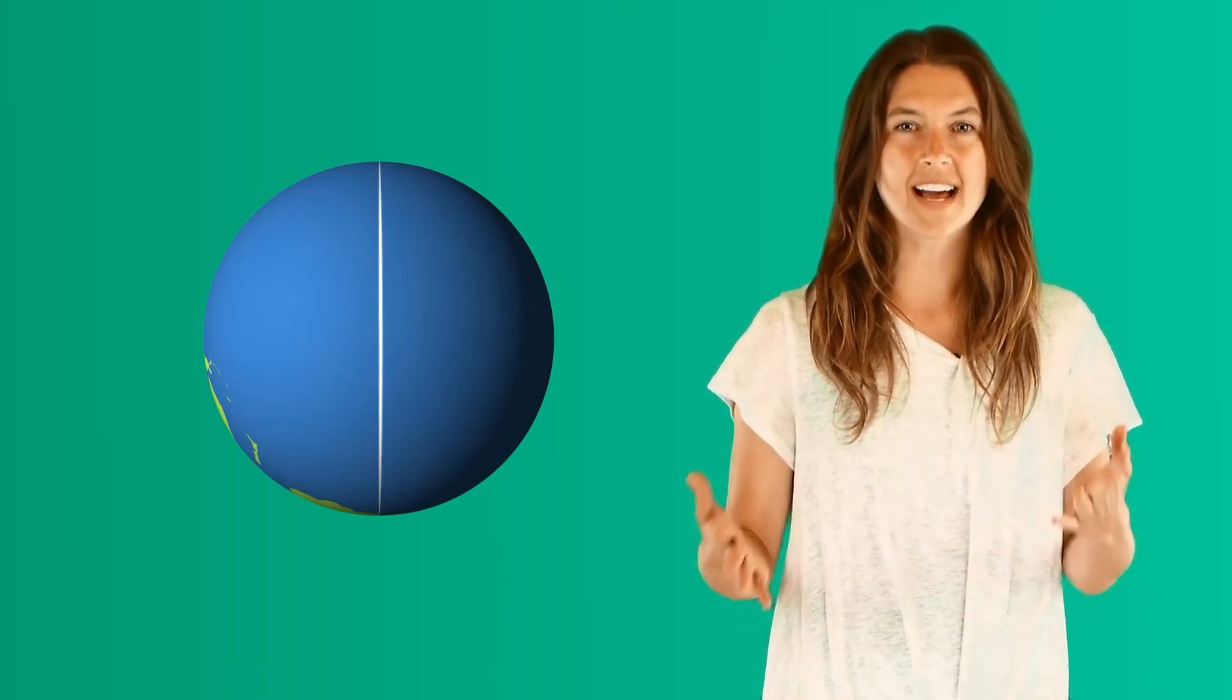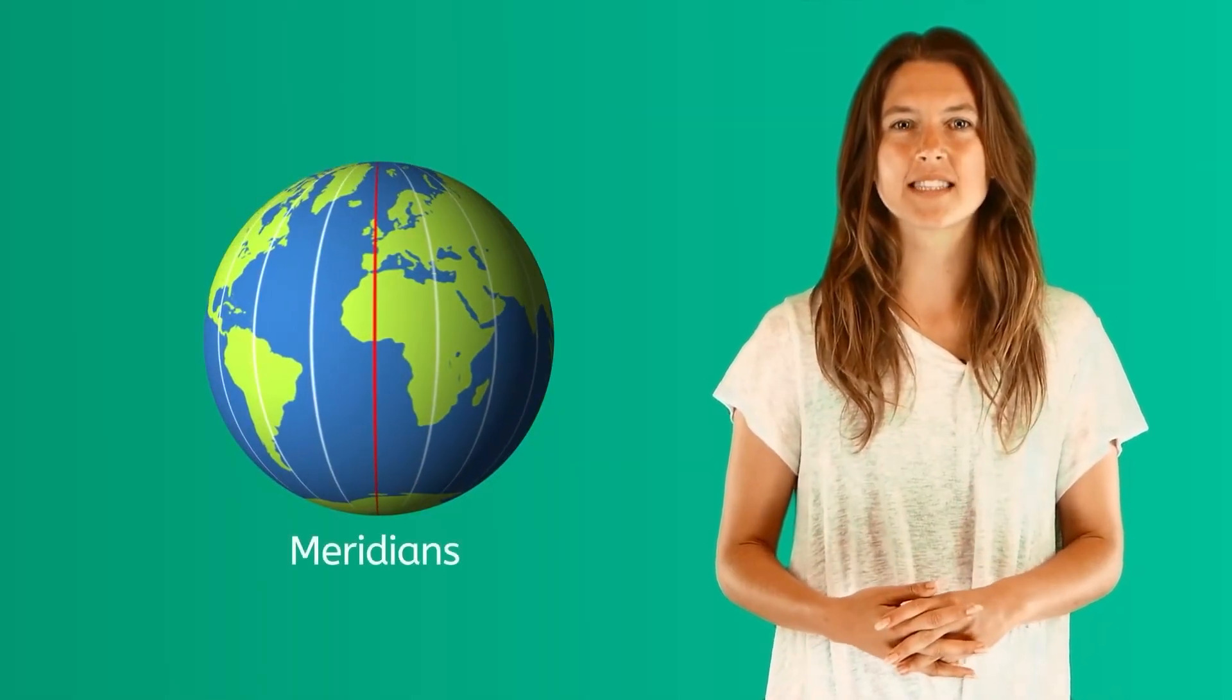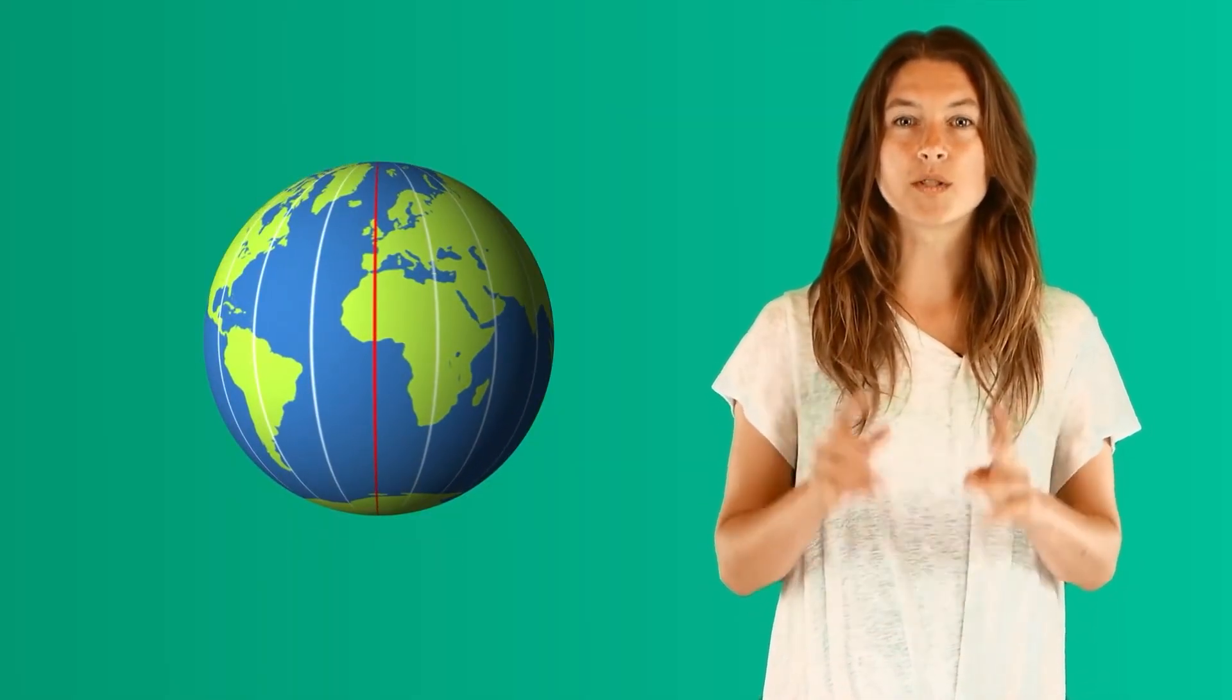Then, all of that space is filled in with more lines of longitude called meridians. Each line equals one degree, with each of the degrees going around the world from zero to 360.